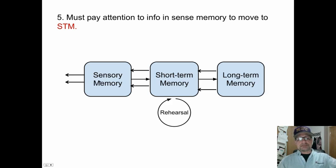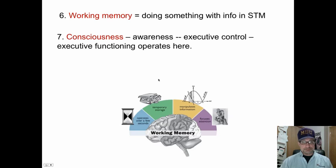A lot of stuff bombards our senses, but we have to selectively choose to attend to it to get to short-term memory. Working memory is technically doing something with information in short-term memory. Some people call this consciousness, what you're aware of. This is where executive control is, where you choose to pay attention to certain things and attend to information.